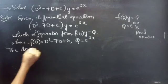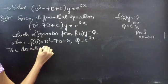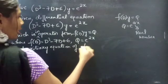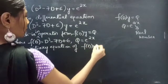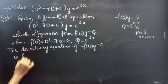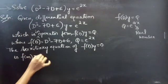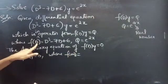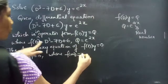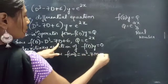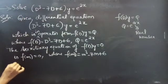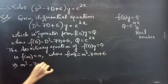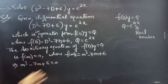The auxiliary equation of F(D)·y = 0 is F(m) = 0, where F(m) is obtained by replacing D with m in F(D). Then F(m) = m³ - 7m + 6, so the auxiliary equation is m³ - 7m + 6 = 0.